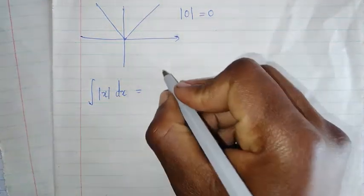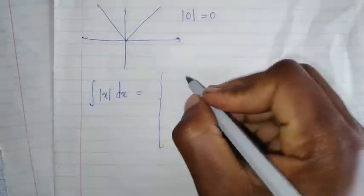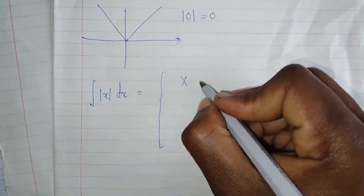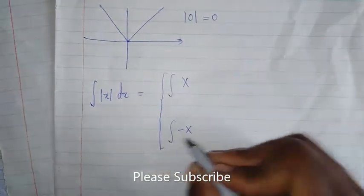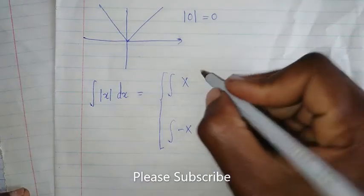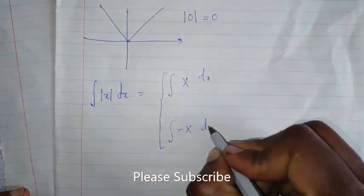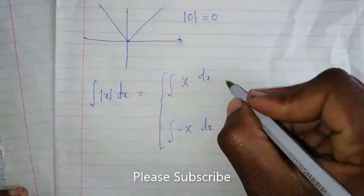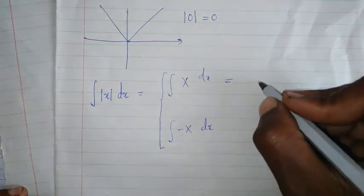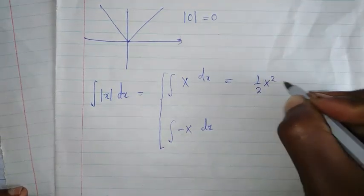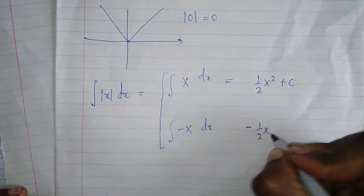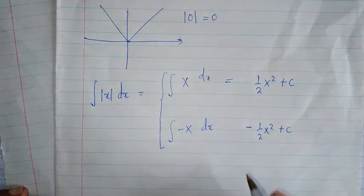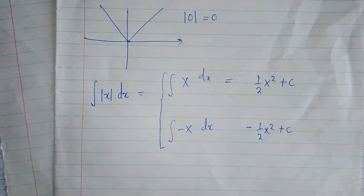The integral of modulus of x splits into two parts: the integral of x dx, and the integral of negative x dx, so you integrate them separately. From the first I get half x squared plus c, and from the second I get negative half x squared plus c.